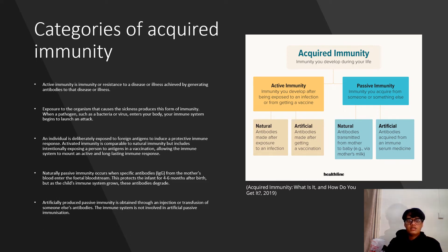Natural passive immunity occurs when antibodies are naturally passed from one person to another through prenatal and postnatal contact between mother and child. Specific antibodies pass from the mother's blood into the fetal bloodstream, and antibodies can also be passed on through breast milk. Immunoglobulins can pass through the placenta and enter the fetal blood, protecting the infant for four to six months after birth. But as the child's immune system grows, these antibodies degrade.